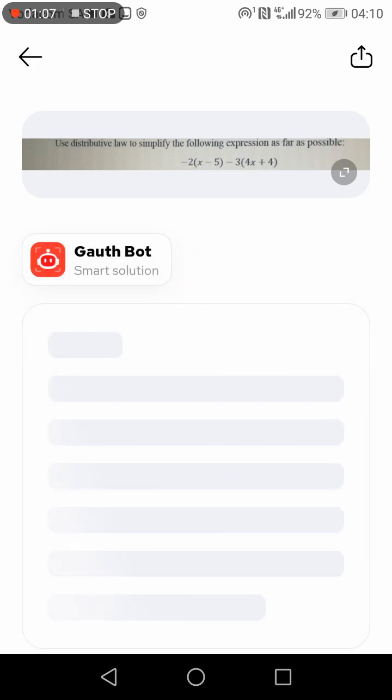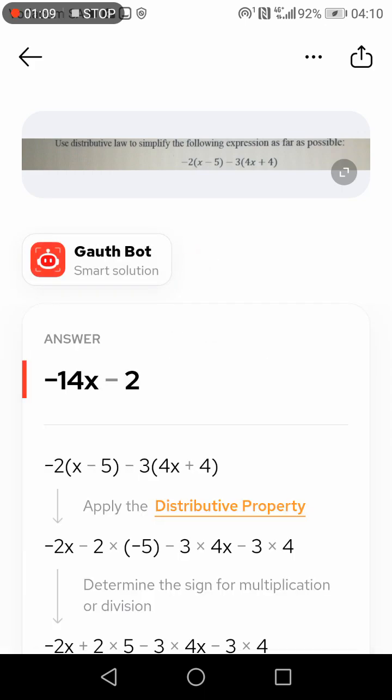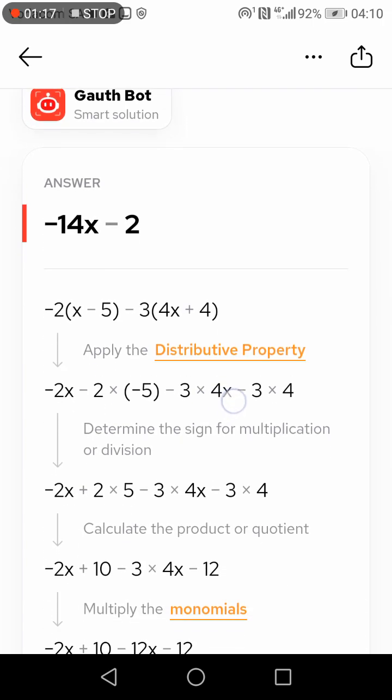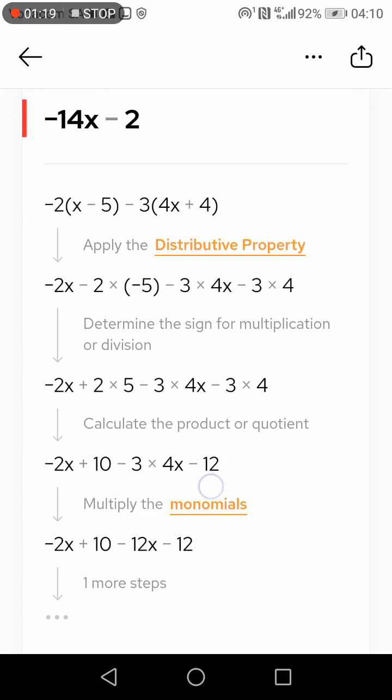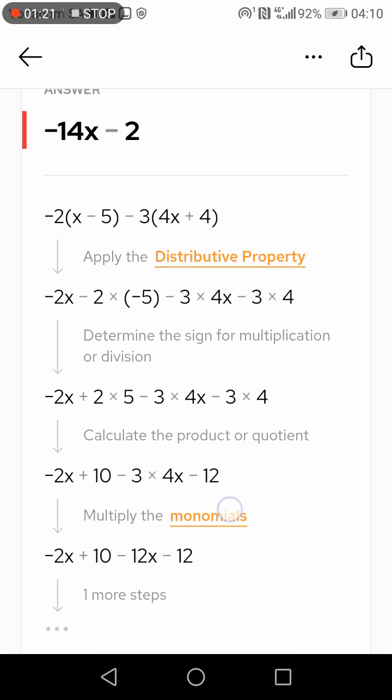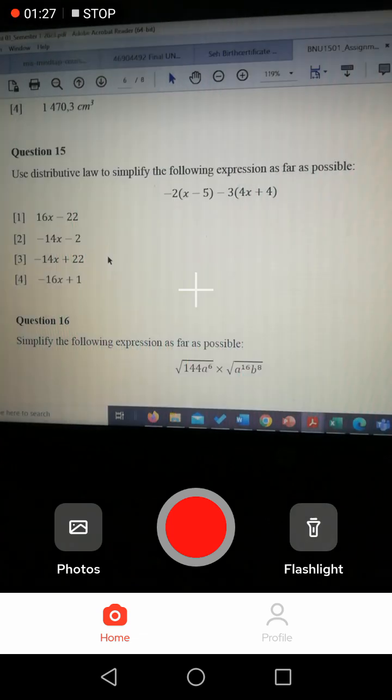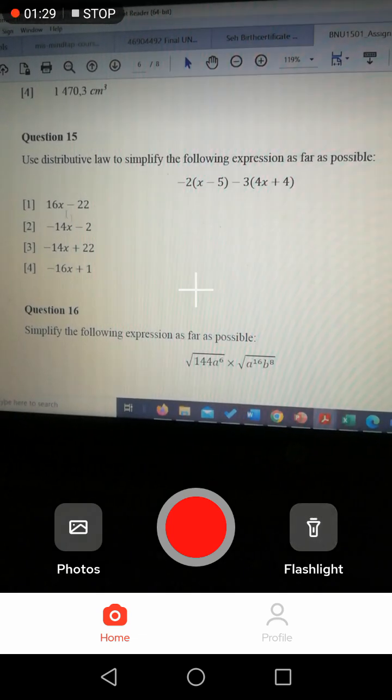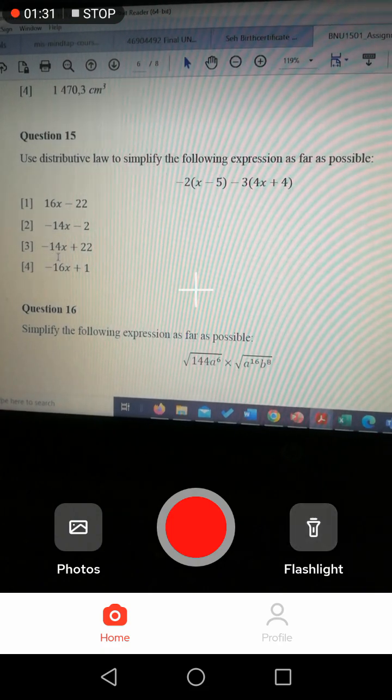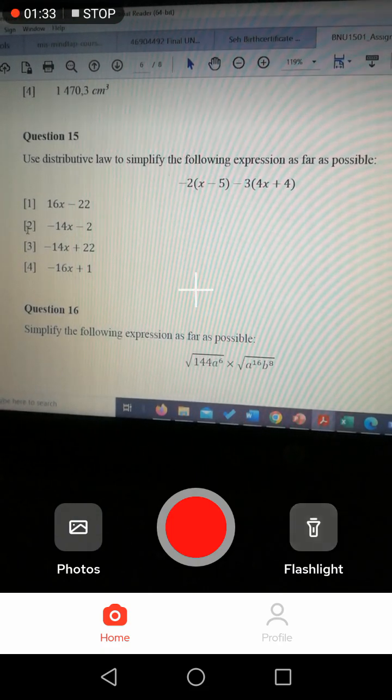So it's calculating, and it's telling you that the answer is negative 14x minus 2, and then it's giving you the step-by-step on how it came up with this answer. If I go back, the negative 4x minus 2 in this multiple choice is my second one, so my answer will be number two.